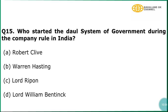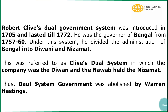Question number 15: Who started the dual system of government during the company rule in India? The correct answer is option number B, Robert Clive. In explanation, Robert Clive's dual government system was introduced in 1765 and lasted till 1772. He was the Governor of Bengal from 1757 to 1760. Under this system, he divided the administration of Bengal into Dewani and Nizamat. This was referred to as the Clive Dual system, in which the company was the Dewan and the Nawab held the Nizamat. The Dual system of government was abolished by Warren Hastings.